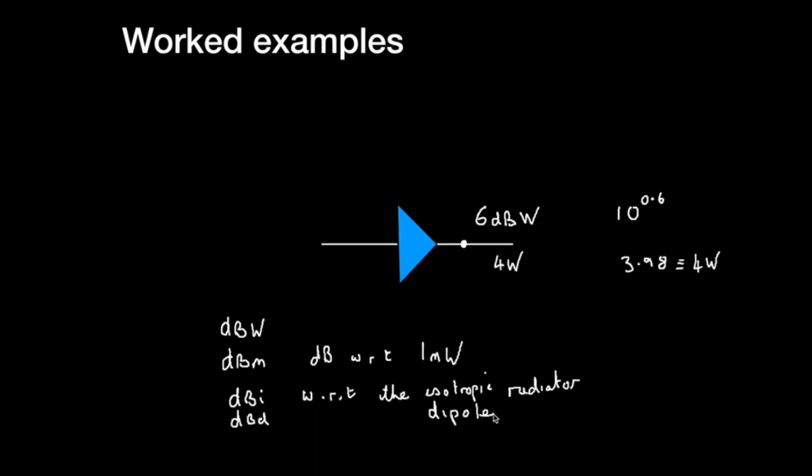Statements like the output of the transmitter is 40 dB is meaningless. It has to be dB with respect to a watt or a milliwatt or something. The statement that an amplifier might have a gain of 5 dB is meaningful because we're saying the gain is 5 dB and that is the output with respect to the input, so that's implicit. Unless we're talking about output with respect to input and we're looking for an absolute value, it has to be dB with respect to something else.